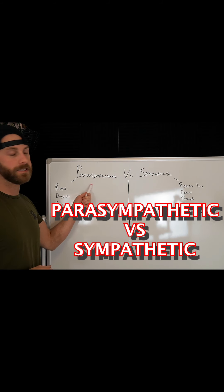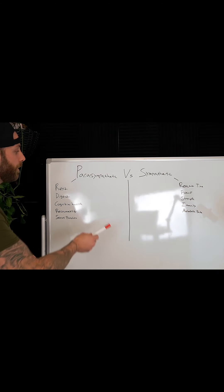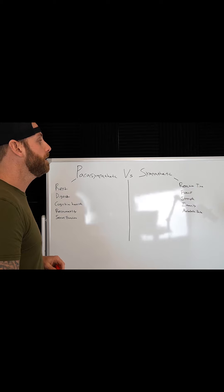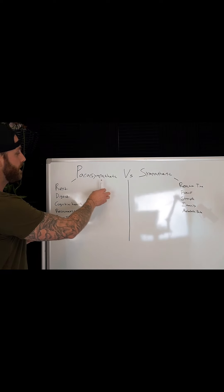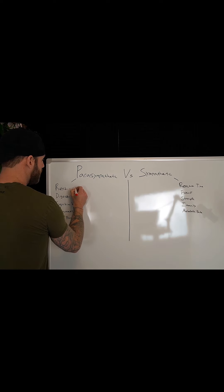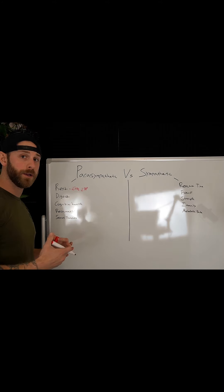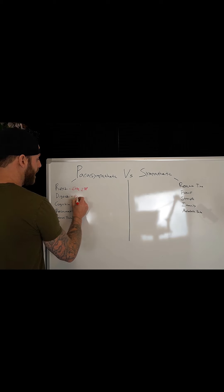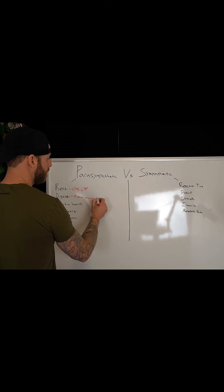Let's talk parasympathetic state versus sympathetic state as it relates to stress. Most people are familiar with the parasympathetic state as being your rest-and-digest state, and then your sympathetic is your fight-or-flight state. The parasympathetic is responsible for decreased heart rate, decreased blood pressure, and release of calming hormones and neurotransmitters such as GABA.